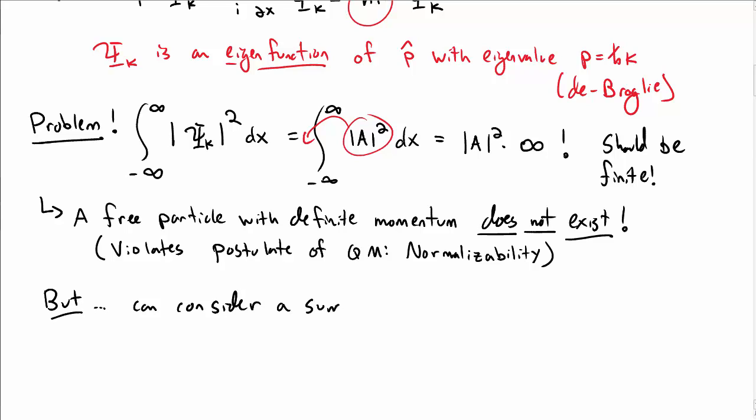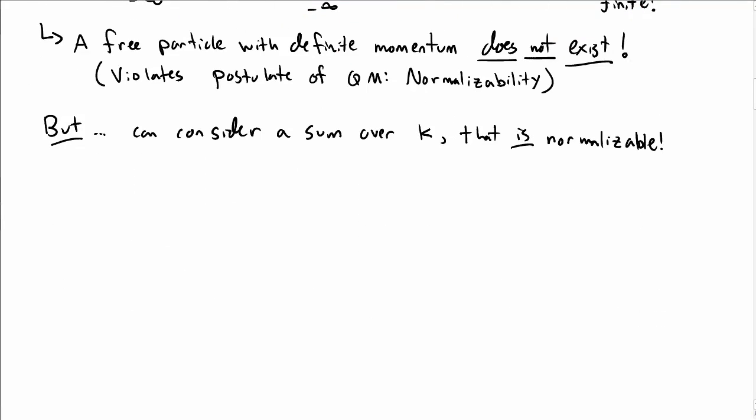But we can consider a sum of lots of different momenta, lots of different k values, and we can make this happen in such a way that the wave function itself is normalizable. Consider in the infinite square well case, the wave function capital psi for a generic wave function was a sum, c sub n, psi sub n of x, and then e to the minus i E_n t over h bar, where we're summing over the individual stationary states.